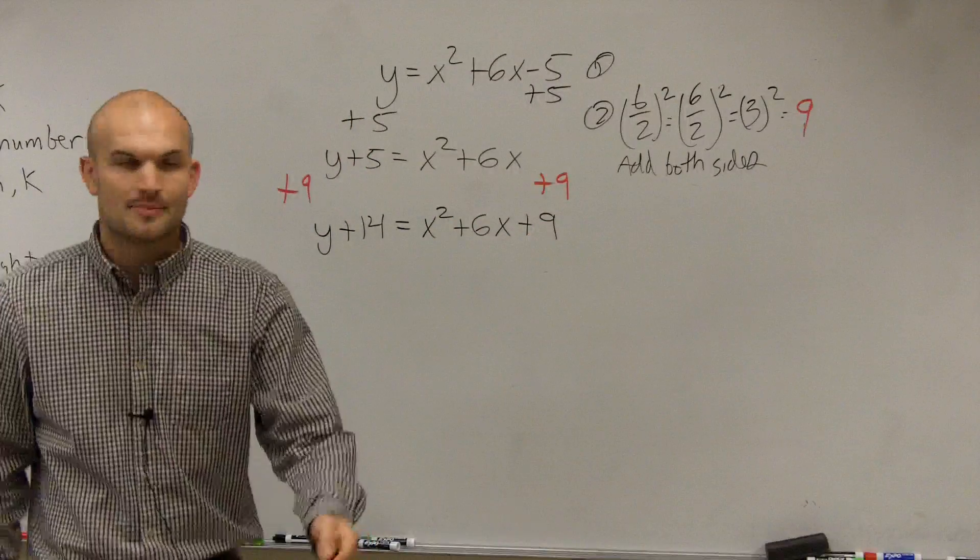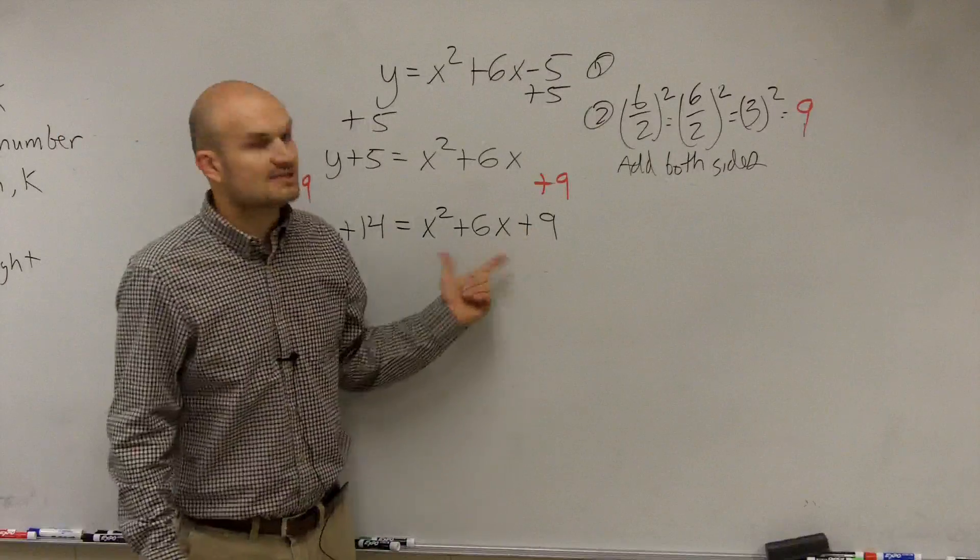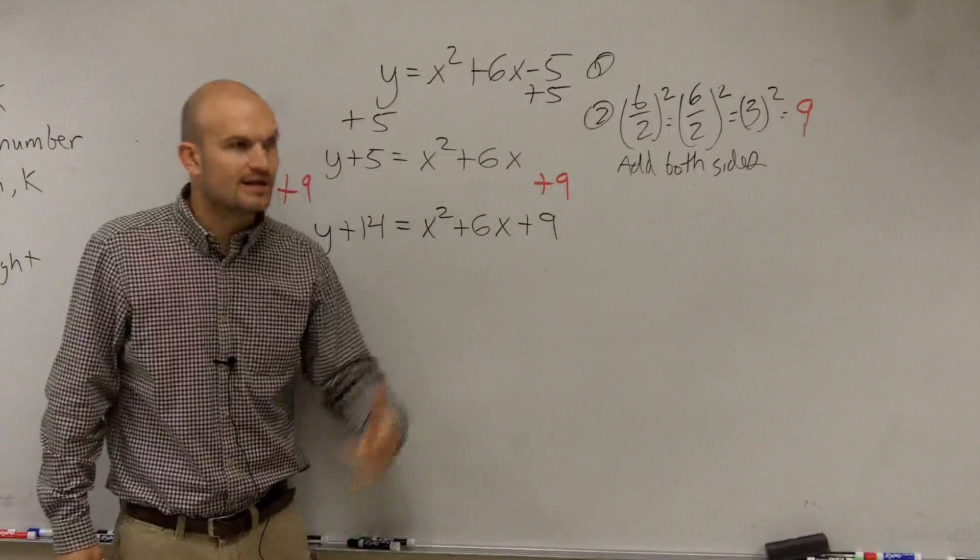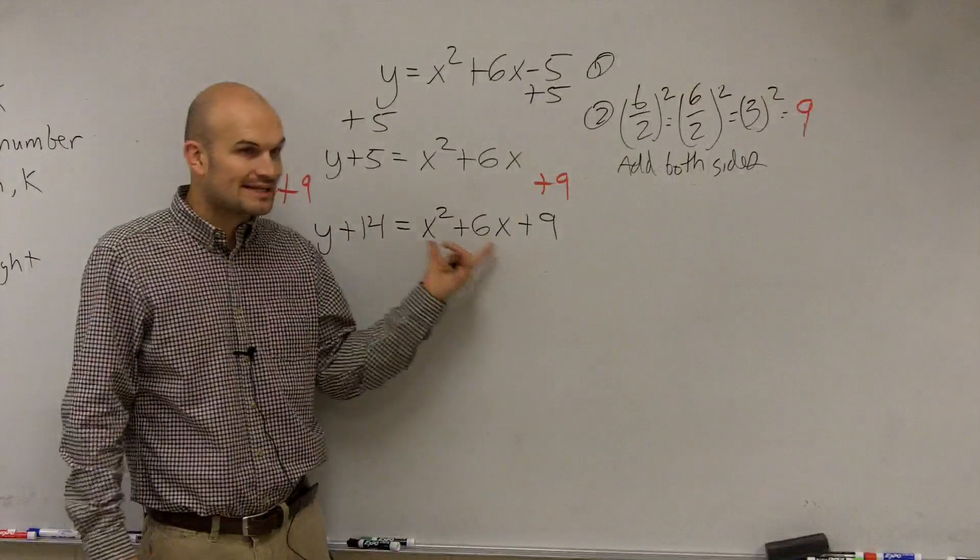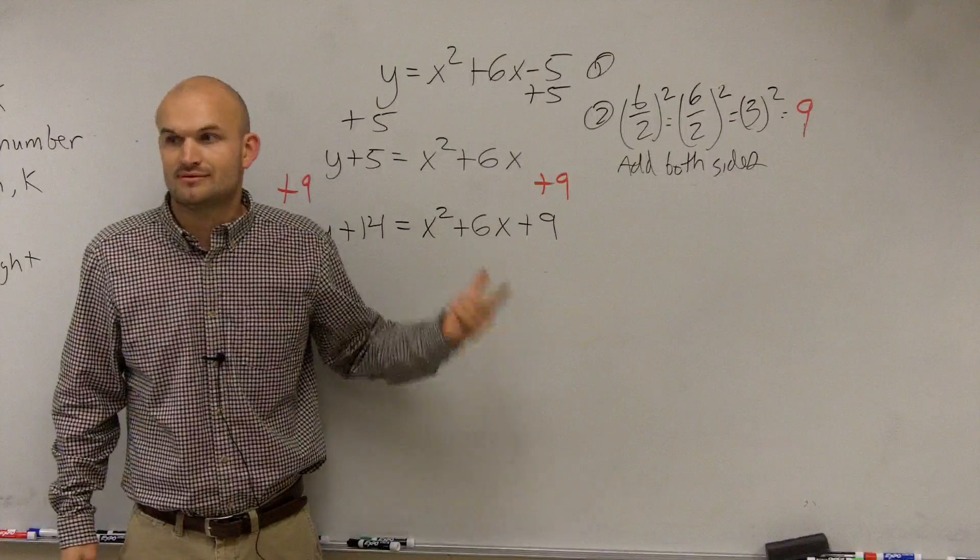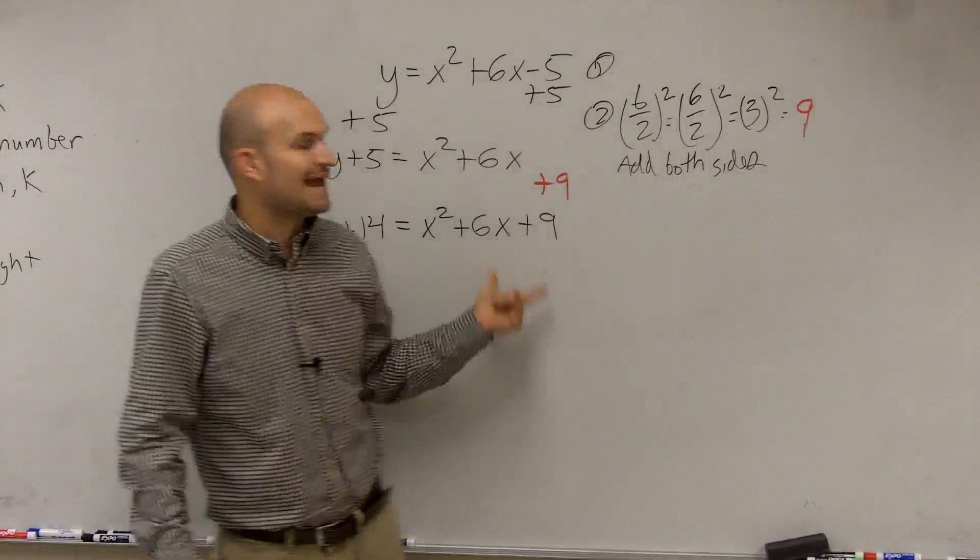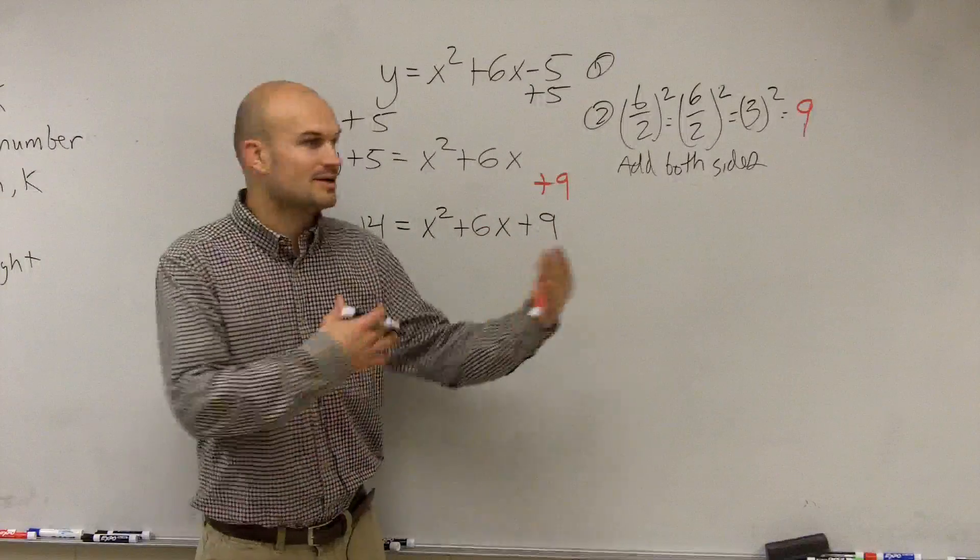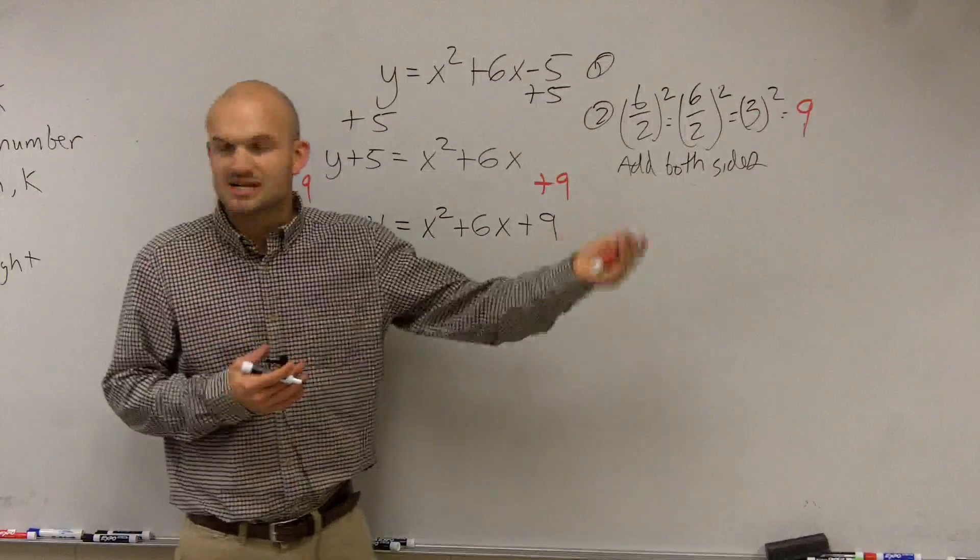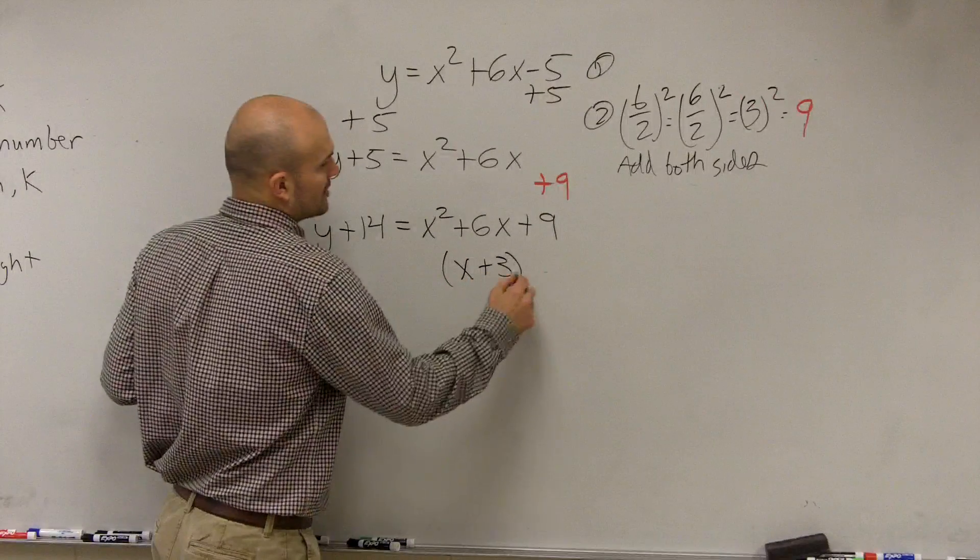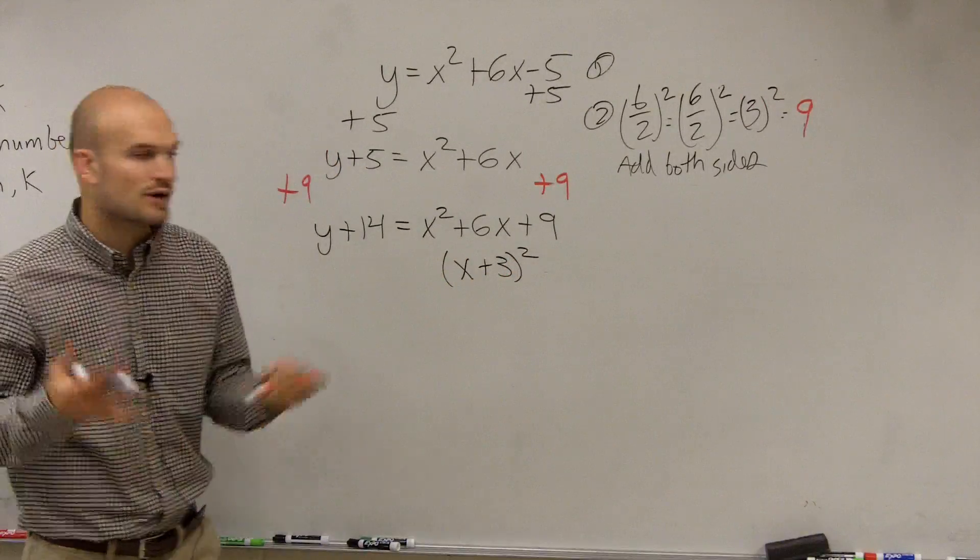So now, the next step is to factor the side that we just created our perfect square trinomial. Hopefully, you guys have understood that factoring this every single time is going to give you a binomial squared, right? That's why we do all this, is to get a binomial squared. So you can do the factoring, the diamond, and do, oh, this is going to be x plus 3 times x plus 3. But hopefully, with a little bit of effort, you guys will get used to this and say, oh, that's going to be x plus 3 squared.